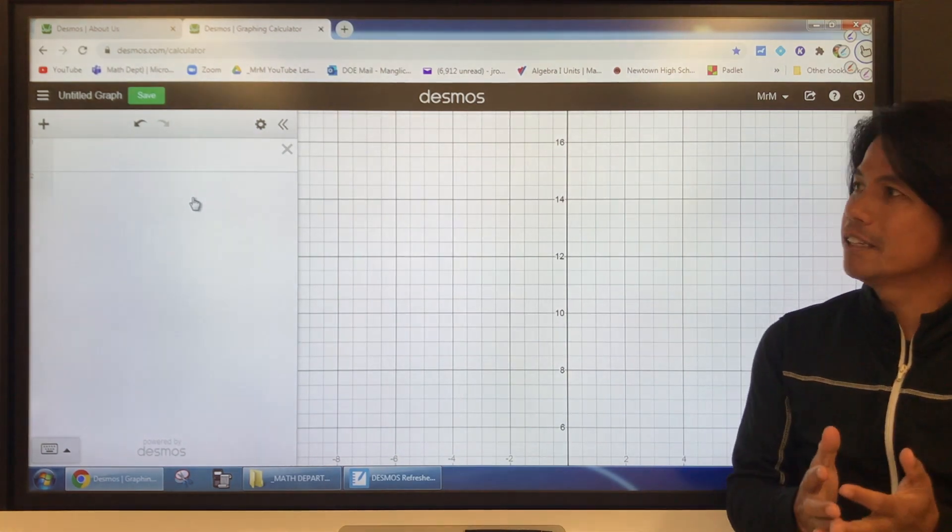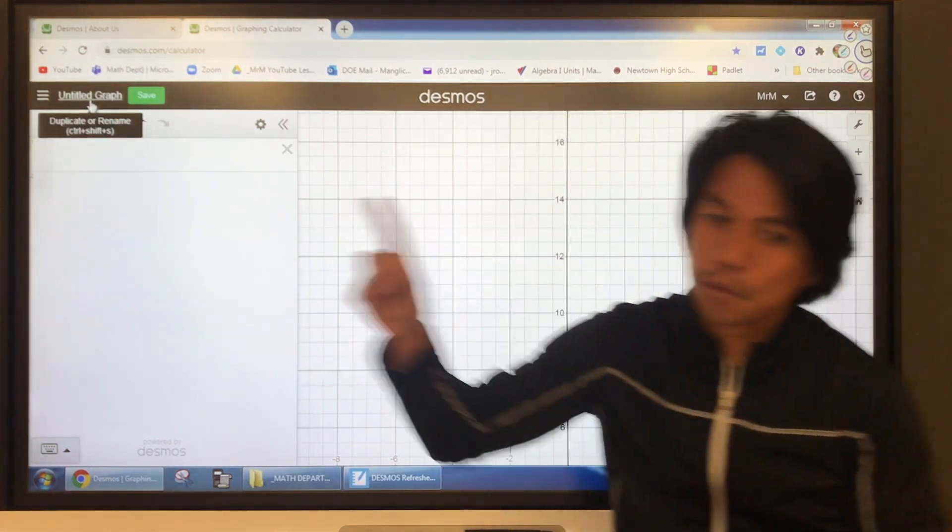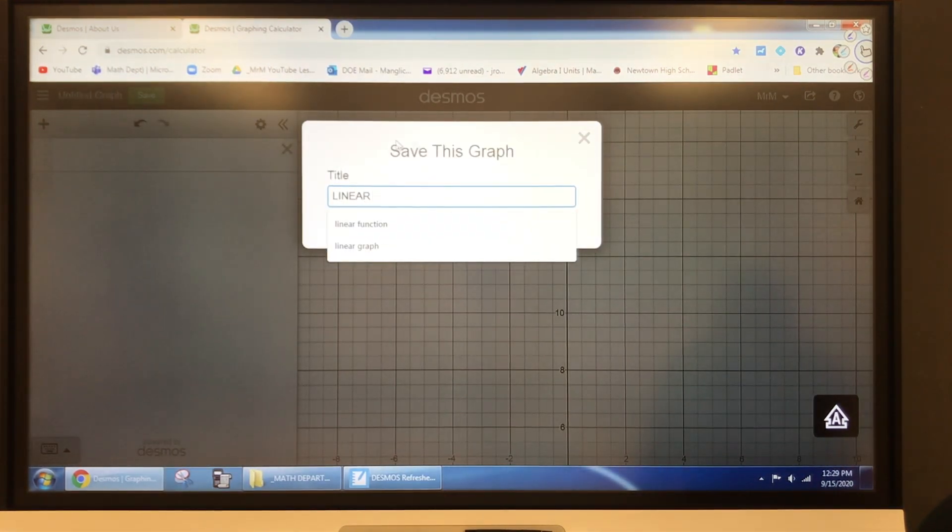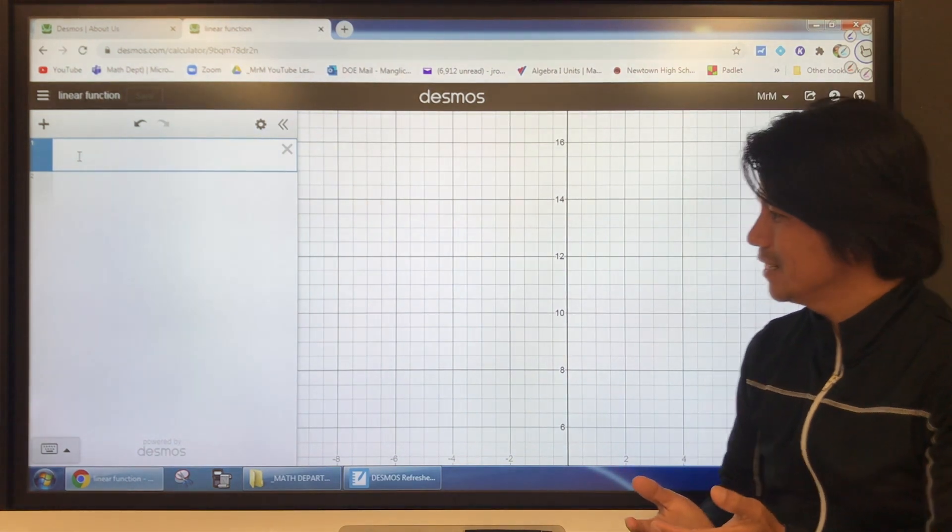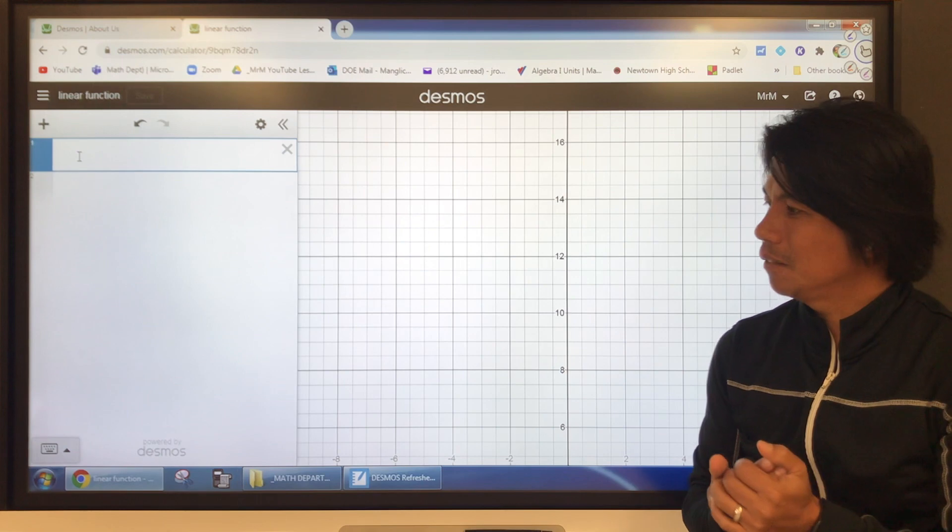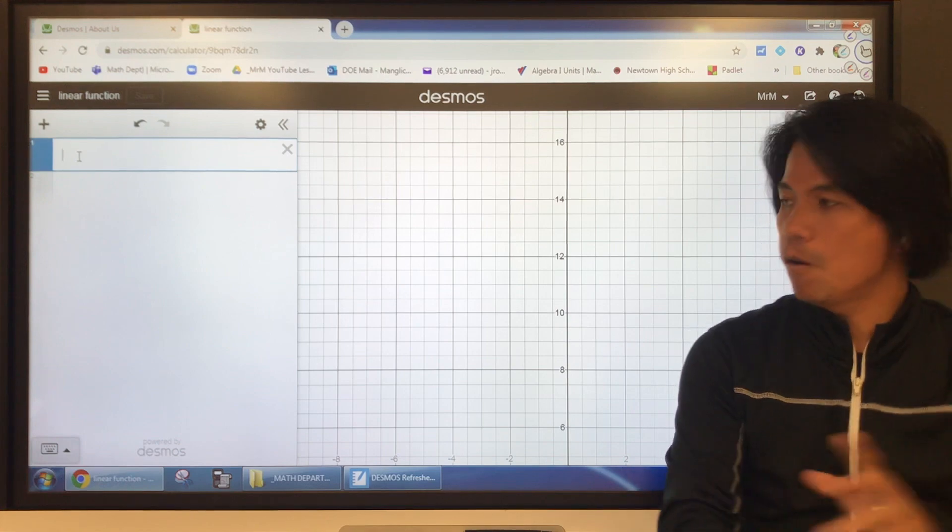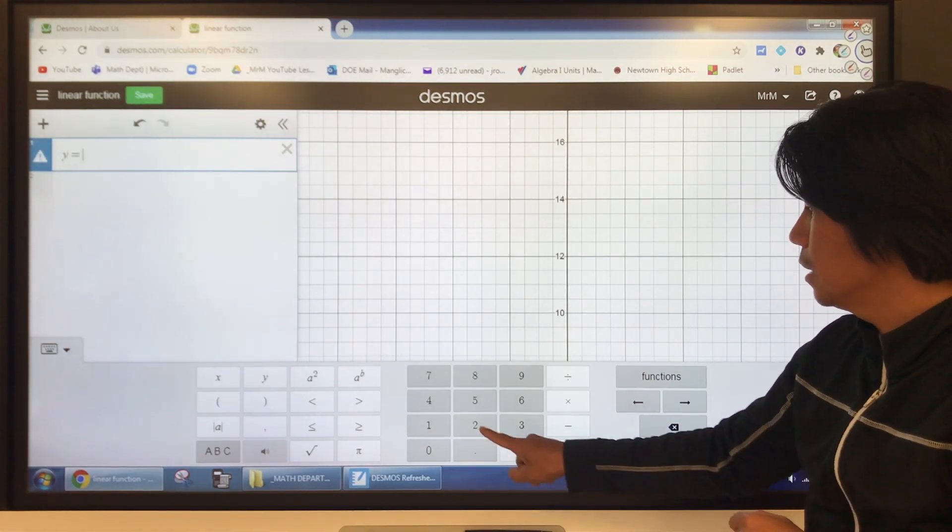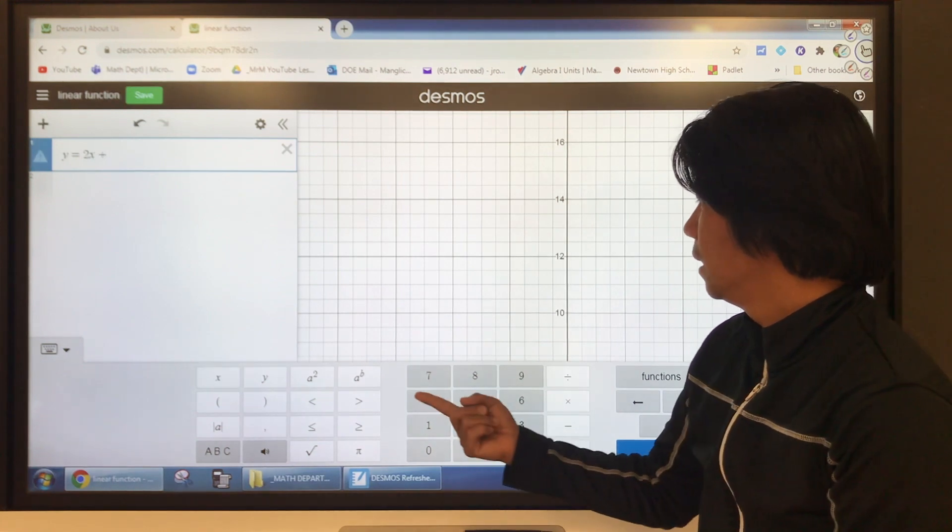Now let's begin with linear function first, the easiest. So here in the untitled graph, what I want you to do is type in a linear function. Okay, I have my linear function ready and saved. So what does a linear function look like? Y equals MX plus B, right? So that's the slope intercept form of linear function. You can use your laptop to type in the function or you can also use this keypad. Y equals let's say 2X plus let's say 3.